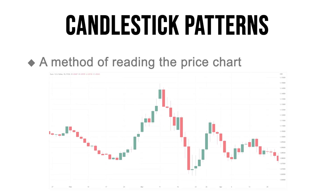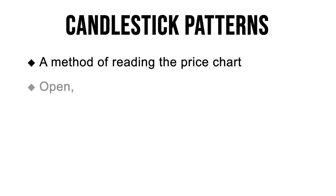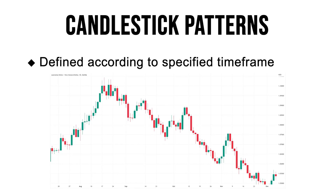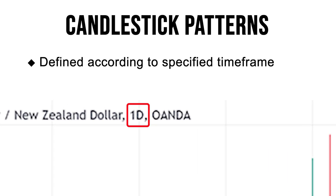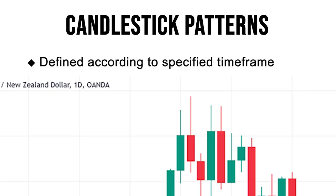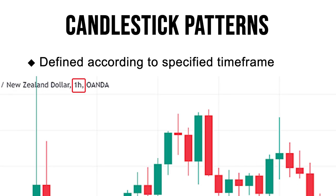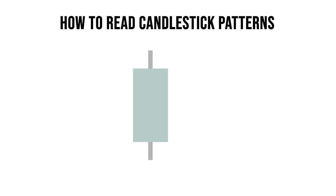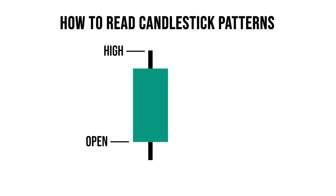What are candlesticks? Candlesticks are one of the most common ways to read charts. Each candlestick can be divided into four parts: the open, the high, the low, and the close. Each candlestick represents a fixed unit of time corresponding to the selected time frame. If we're reading on a daily time frame, one candlestick corresponds to one day. For an hourly time frame, one candlestick means one hour. The open refers to the starting price, the high refers to the peak price, the low refers to the bottom price, and the close refers to the ending price.